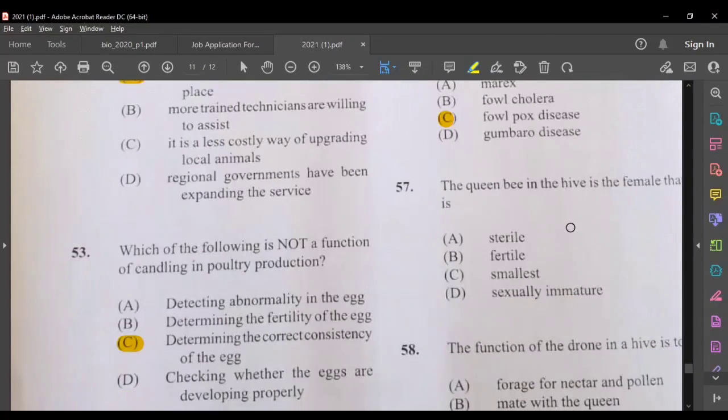The queen bee in the hive is a female that is sterile? No. Yes, the queen bee is fertile. Smallest, sexually immature? No. So the correct answer would be B.